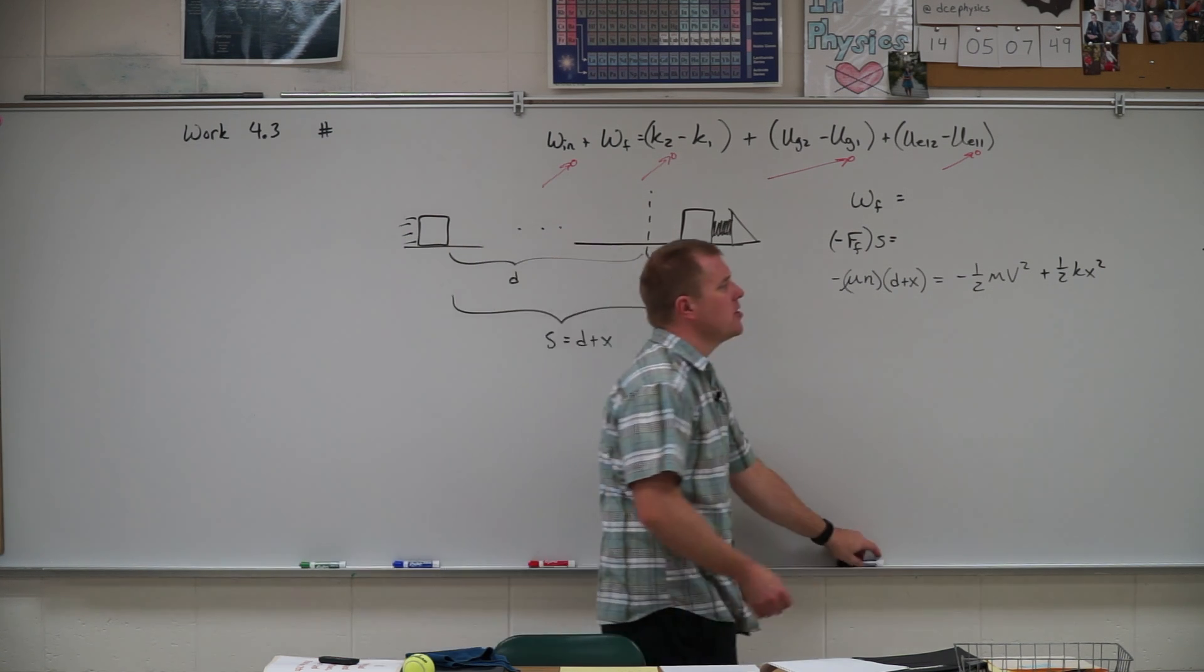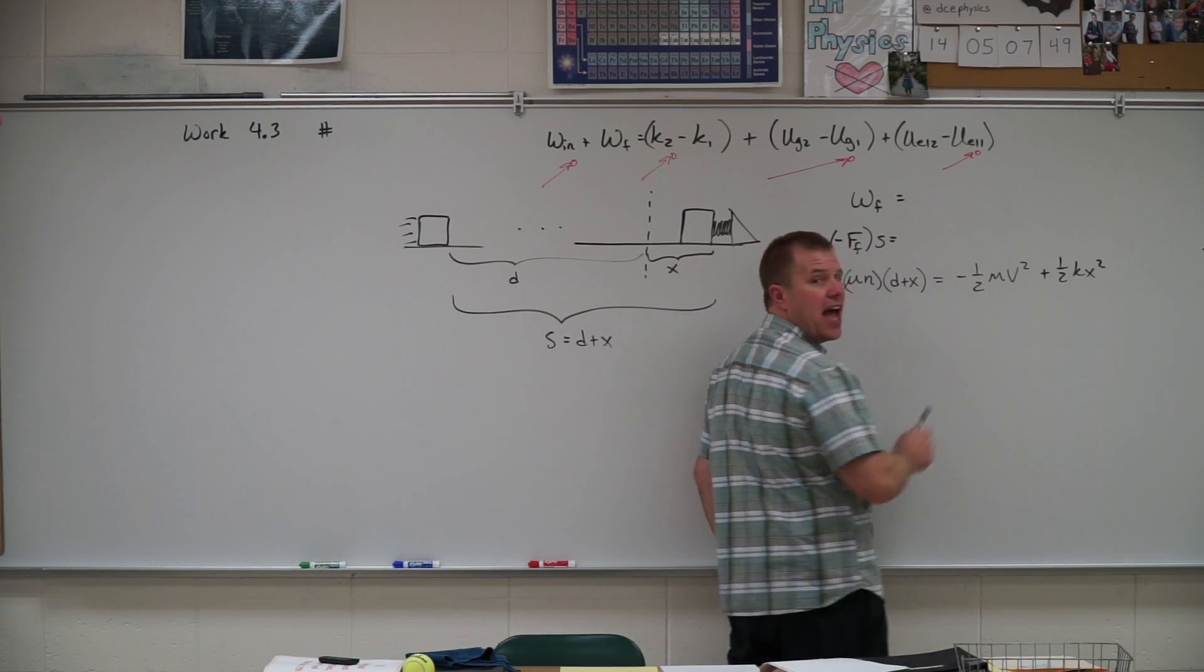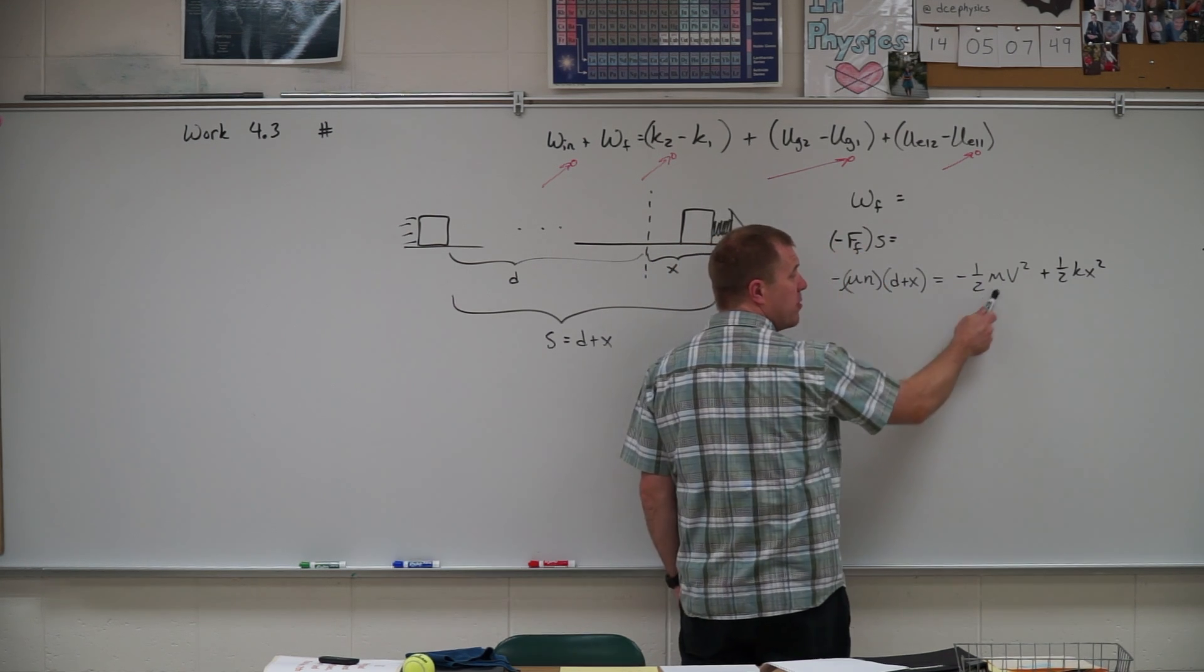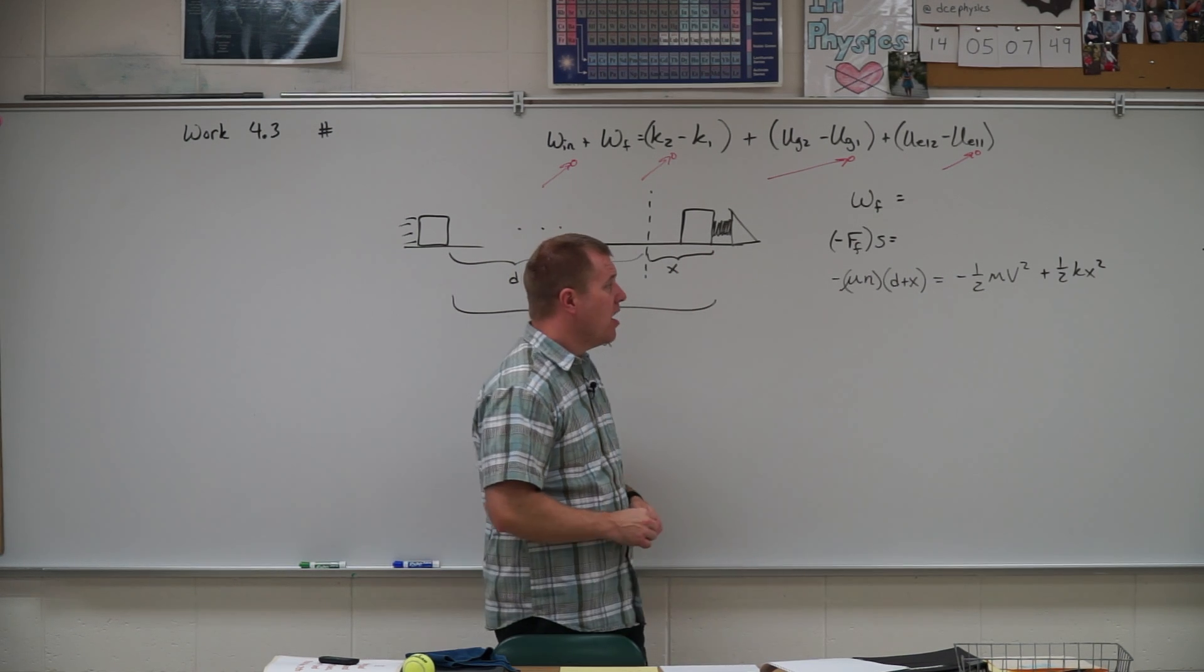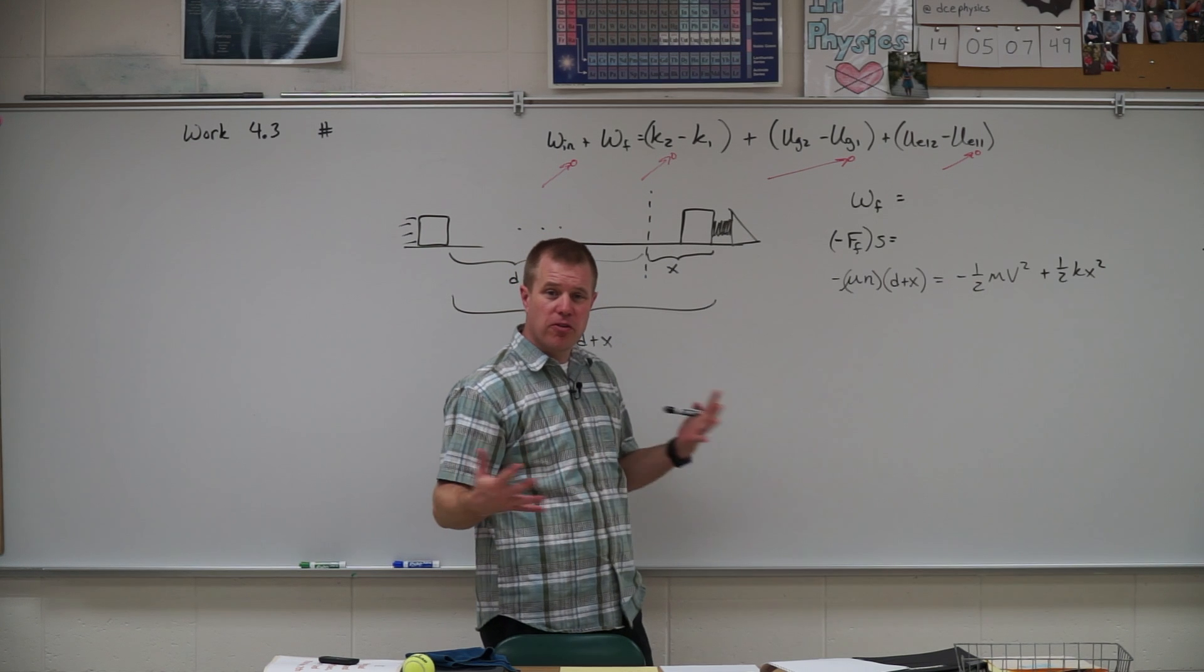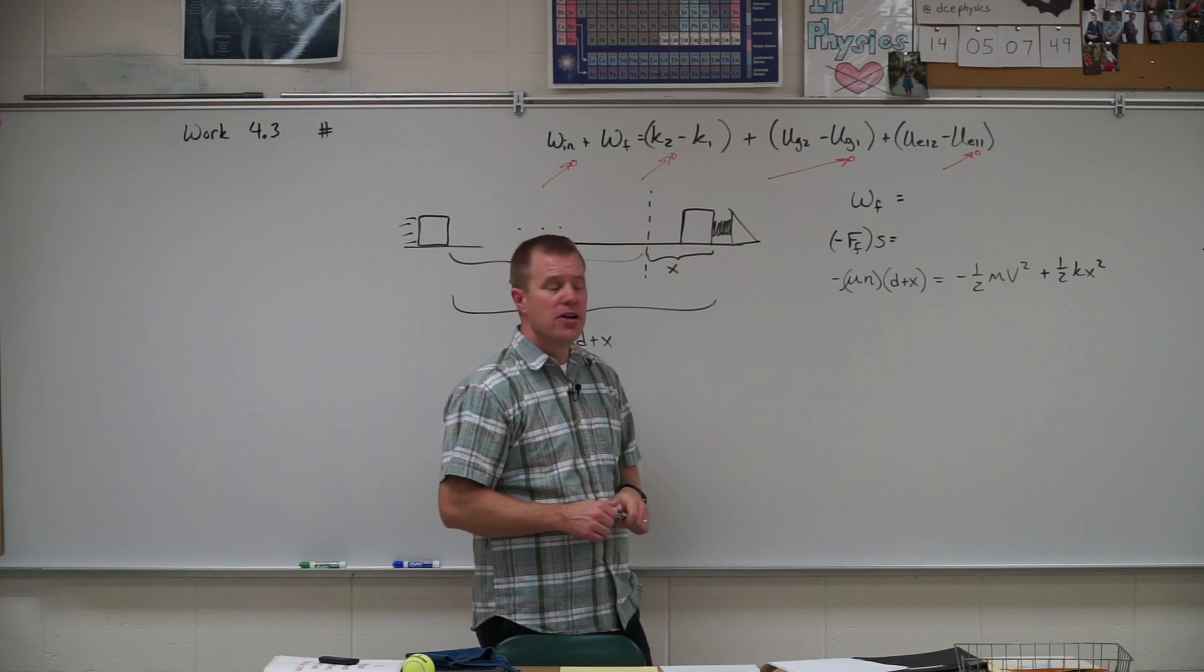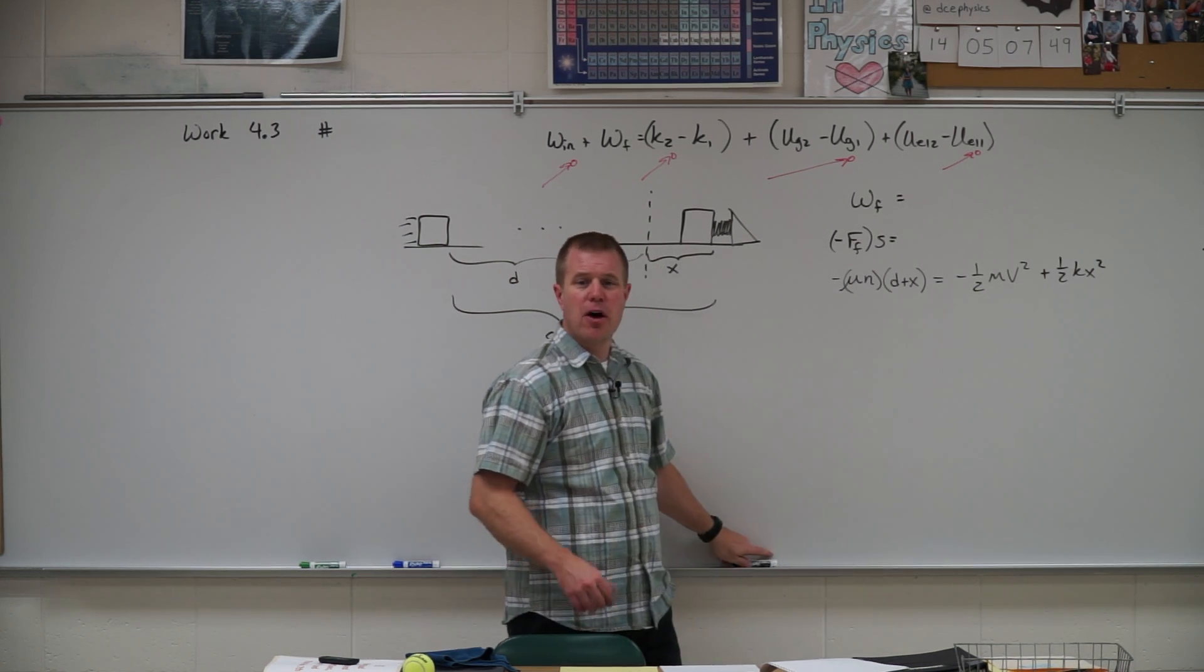In doing so, we now have a term x squared, we have a term without x, we have a term with x, so we end up with a quadratic to solve. So you can choose to use solver or polysimult here to finish that problem off.